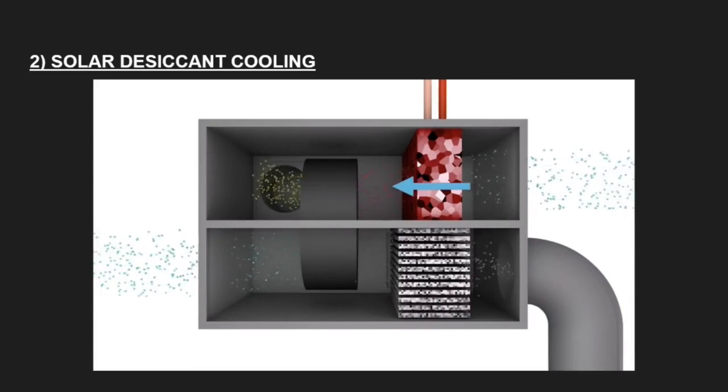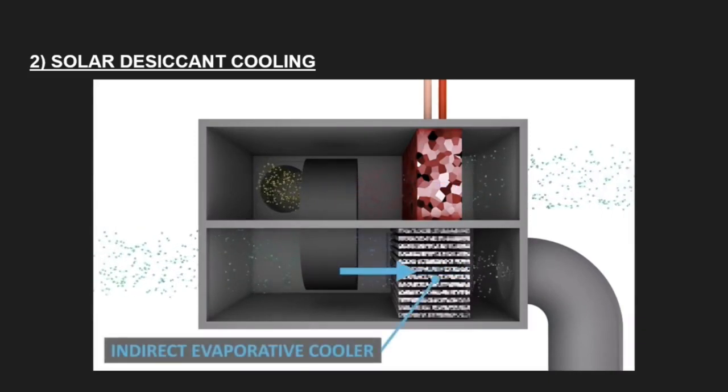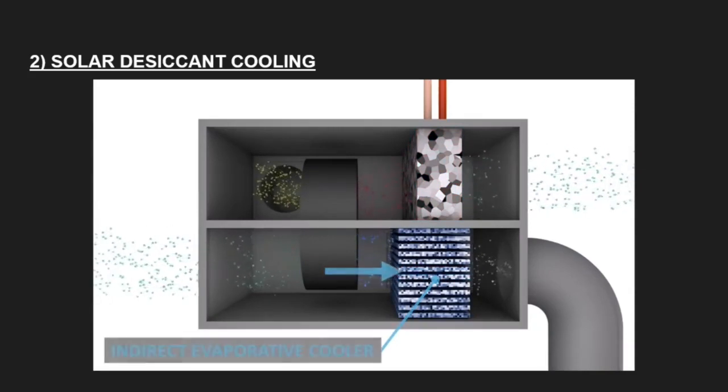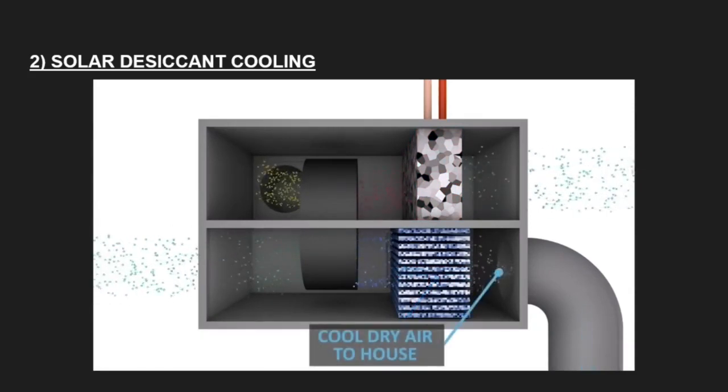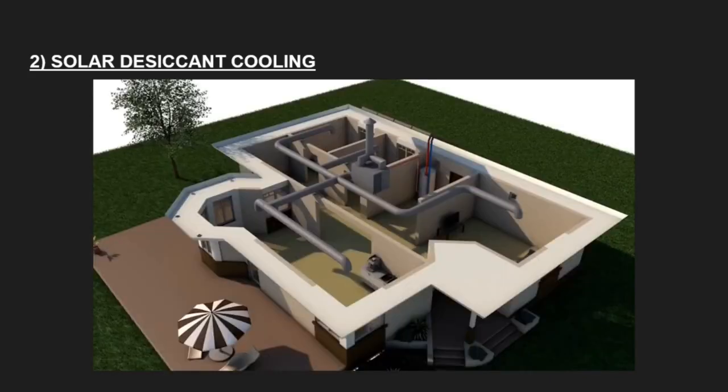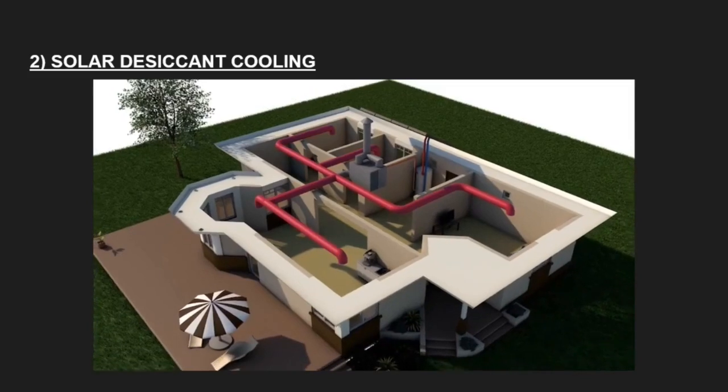This air is then exhausted outside the home. The dry air from the desiccant wheel flows through an indirect evaporative cooler which creates a stream of cool dry air. This cool dry air is then fed into the home to cool down the rooms. In winter, the solar heated air can be used directly to warm the house.